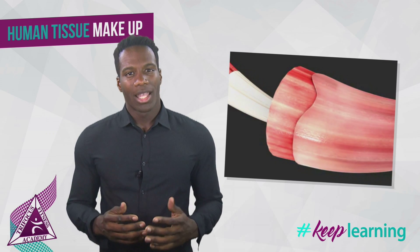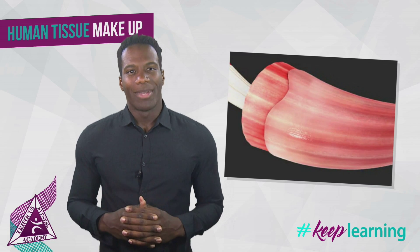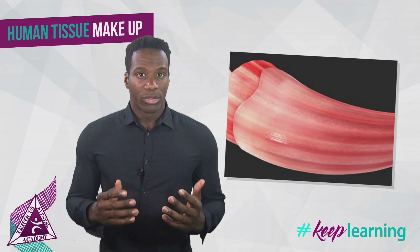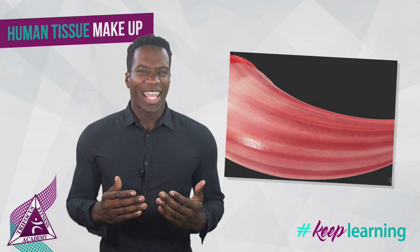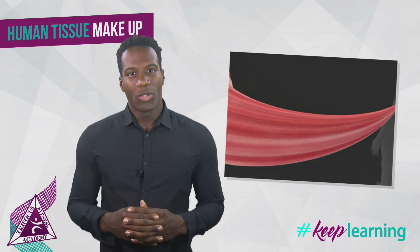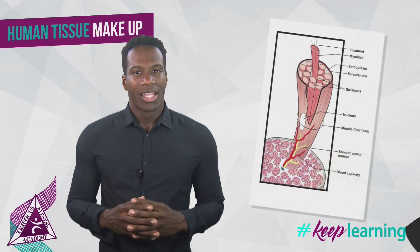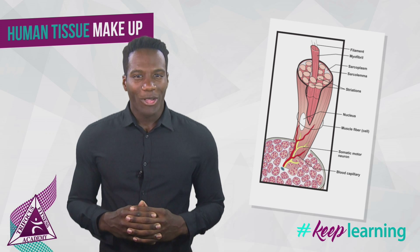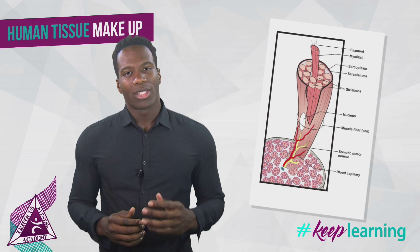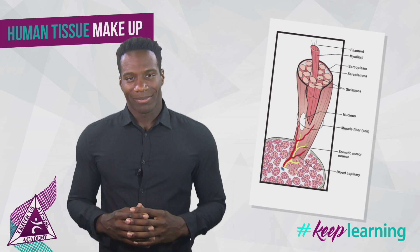As we know, myofibrils are the contractile units that make up each muscle fiber. Myofibrils can be looked upon as the building blocks of muscle and contain units called sarcomeres. Sarcomeres are the smallest functional unit of skeletal muscle and are composed of two protein filaments, actin and myosin.